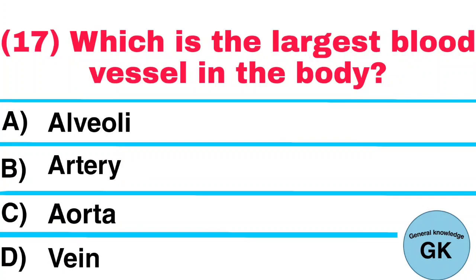Question number 17. Which is the largest blood vessel in the body? A. Alveoli. B. Artery. C. Aorta. D. Vein. Answer: Aorta.